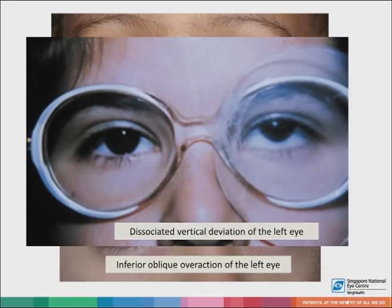The third type is convergence insufficiency, where the near deviation is more than 10 prism diopters larger than the distance deviation. In the management of intermittent exotropia, general principles apply: firstly correct any significant refractive error, secondly treat any amblyopia, and thirdly consider conservative treatment such as fusion and convergence exercises or base-in prisms. Indications for surgery include an increasing tropia phase with diminished fusion control, poor fusion recovery on cover-uncover testing, exotropia manifest more than 50% of waking hours, or exotropia more than 15 prism diopters or increasing in size.